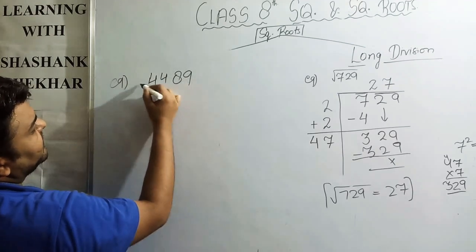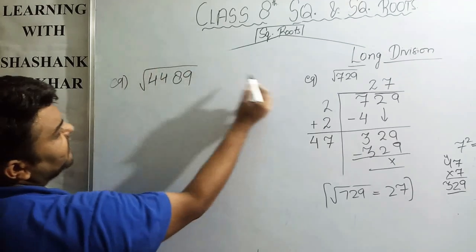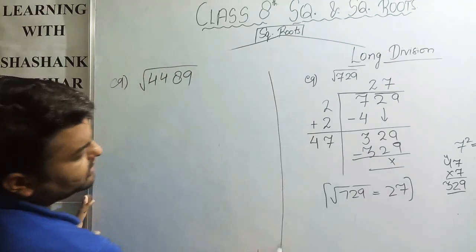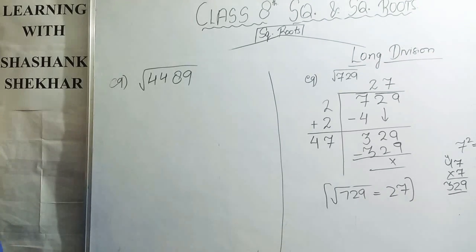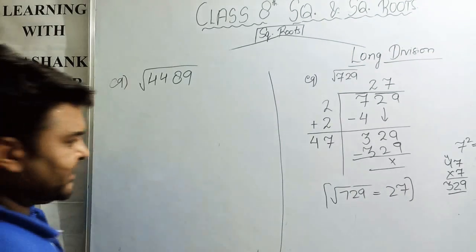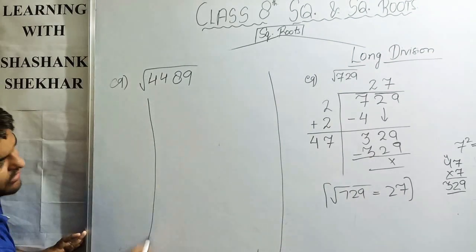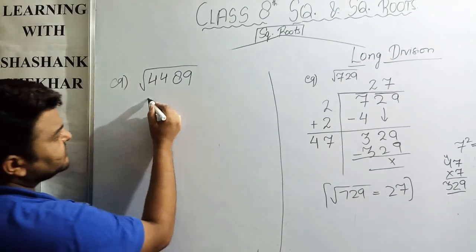The next example: find the square root of 4489.